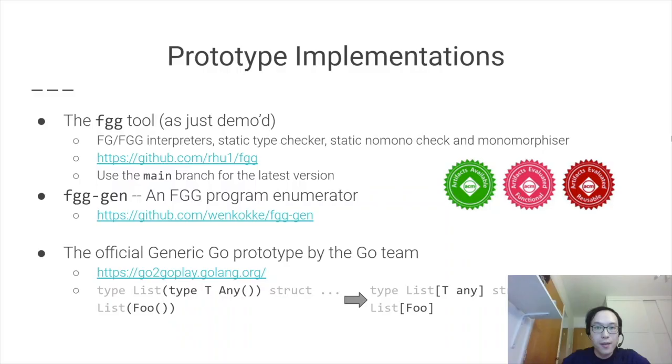If you'd like to try the tool, the source code is available from here. It's written in Go, and it includes FG and FGG interpreters, static type checking, static no mono checking, and the monomorphizer. You can use the main branch for the latest version. Our artifact also includes FGG Gen, which is an FGG program enumerator. It can generate well-typed FGG programs up to a certain size, measured in syntactic constructors. Our artifact uses that to feed generated programs through the tool to test, for example, the simulation property between FGG programs and monomorphized programs.